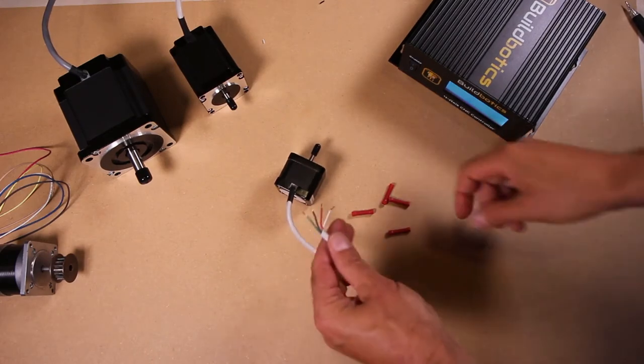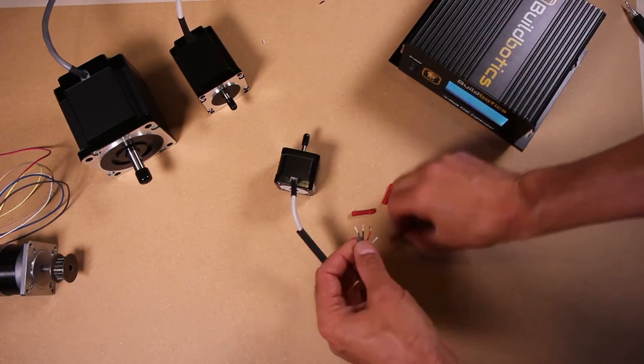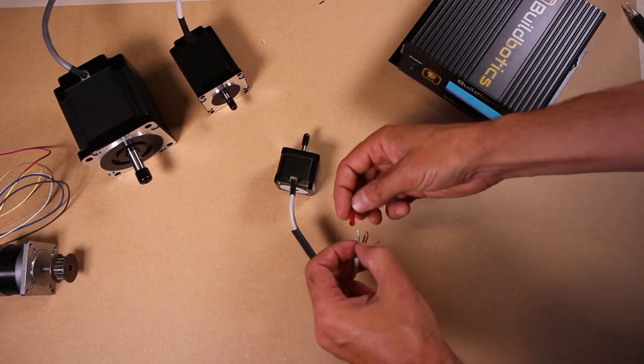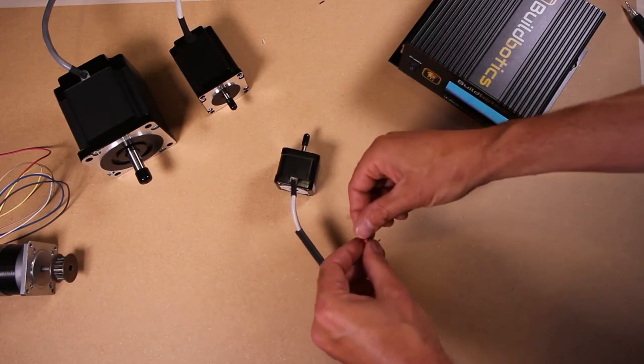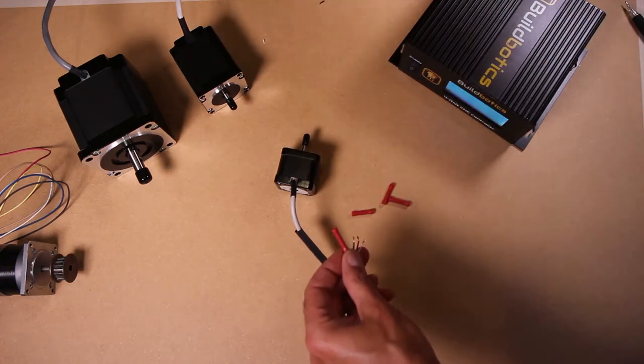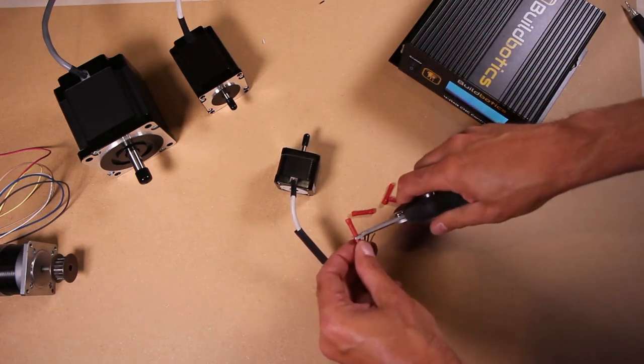Next, I can crimp the butt connectors onto the cable. Now I simply poke the wire into the butt connector to make sure it's in there properly. And then with the pliers, crimp the metal together.